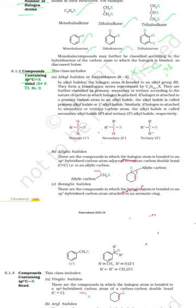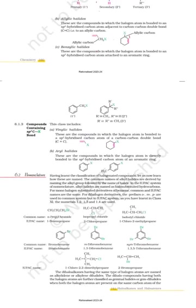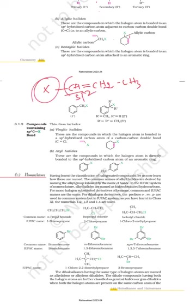The next classification is the benzylic haloalkane, where the halogen is bonded to an sp3 carbon attached to a benzene ring or aromatic ring. Next is the vinylic haloalkane, where the halogen is directly bonded to an sp2 carbon of a carbon-carbon double bond. Then there is the arylic haloalkane, where the halogen is directly bonded to an sp2 carbon of an aromatic ring.